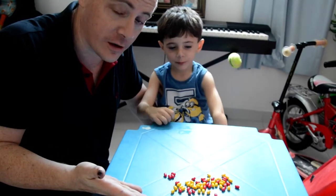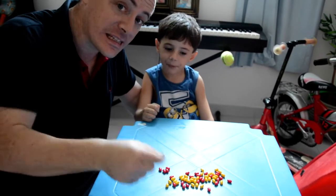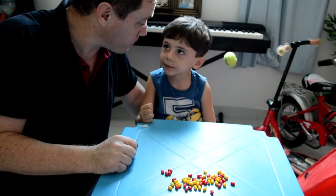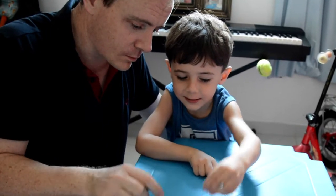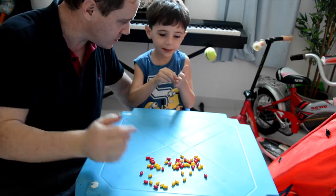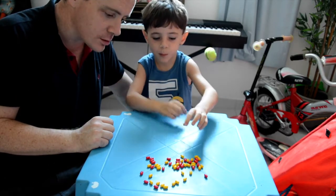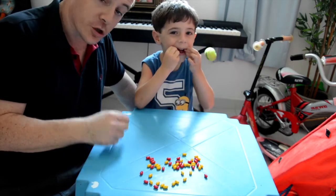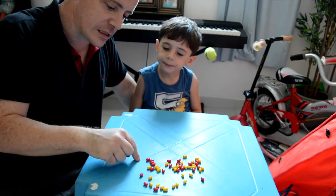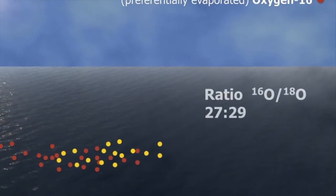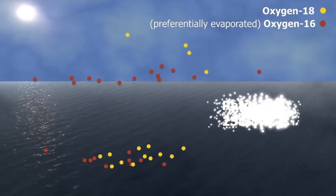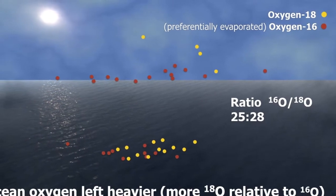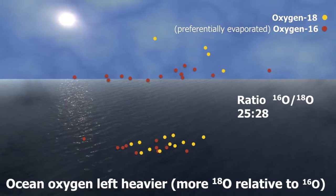Oxygen-16 and Oxygen-18 are both evaporated, but Oxygen-16 is a little bit easier. Both have been evaporated into the atmosphere, but there's been one or two more Oxygen-16 molecules evaporated. So now the ratio between the red and the yellow — Oxygen-16 to Oxygen-18 — is a bit different. The oxygen is actually a little bit heavier if you average everything out in the ocean.